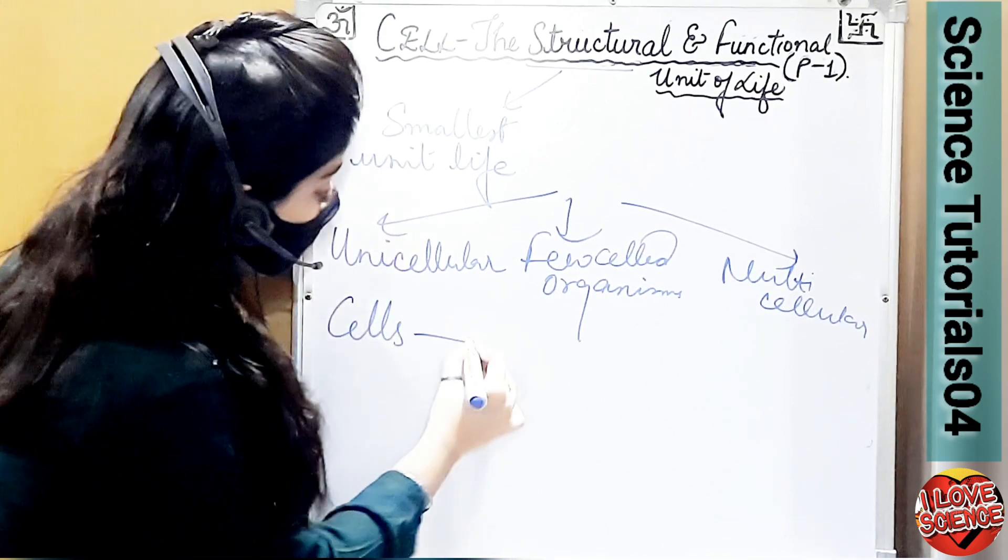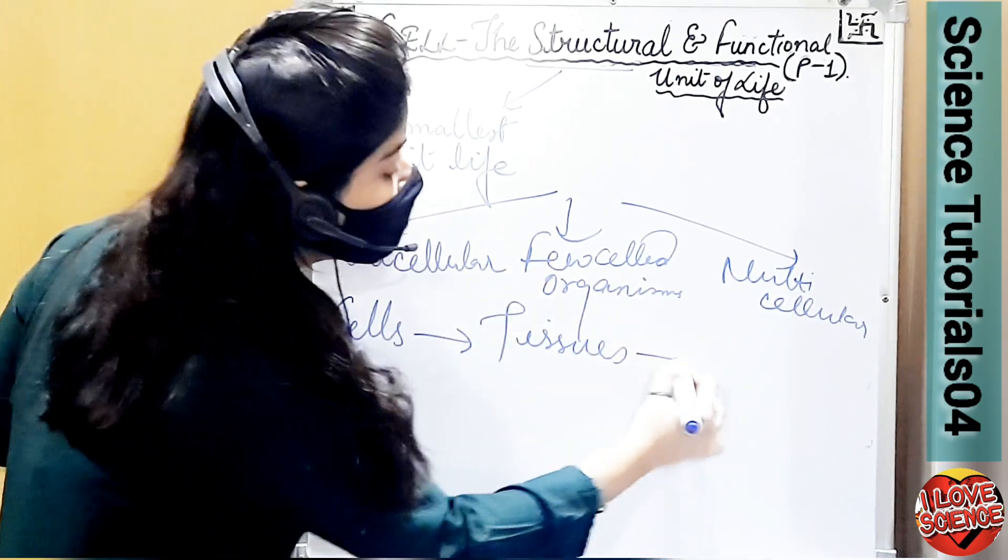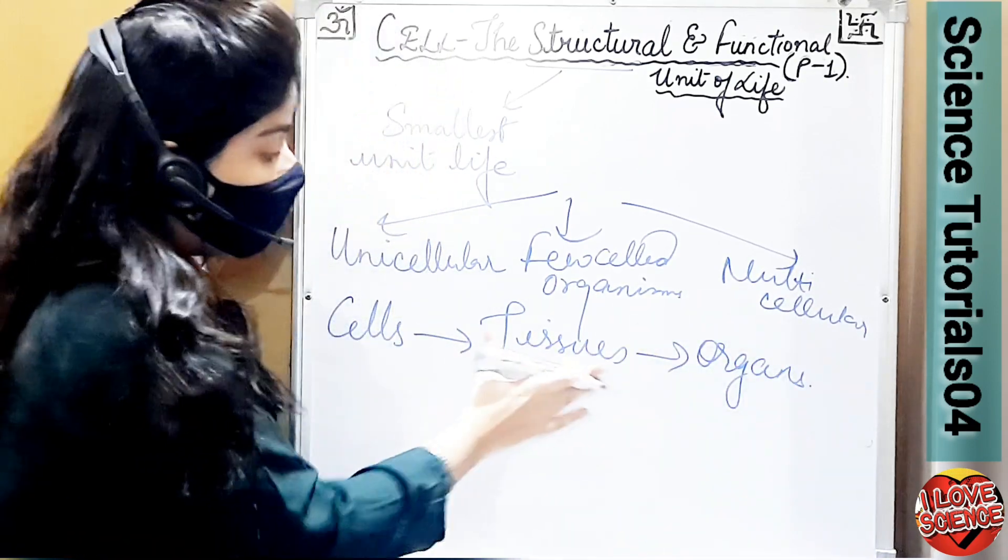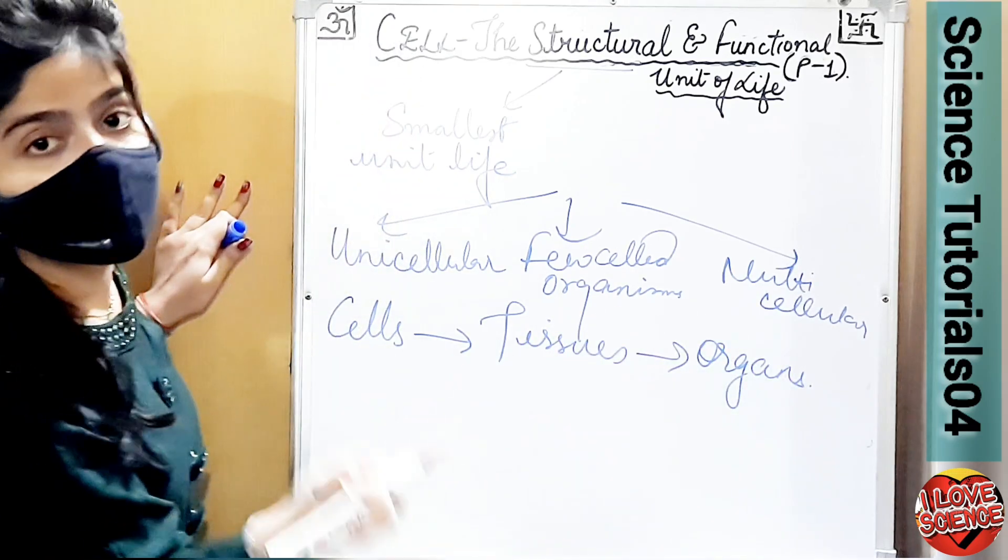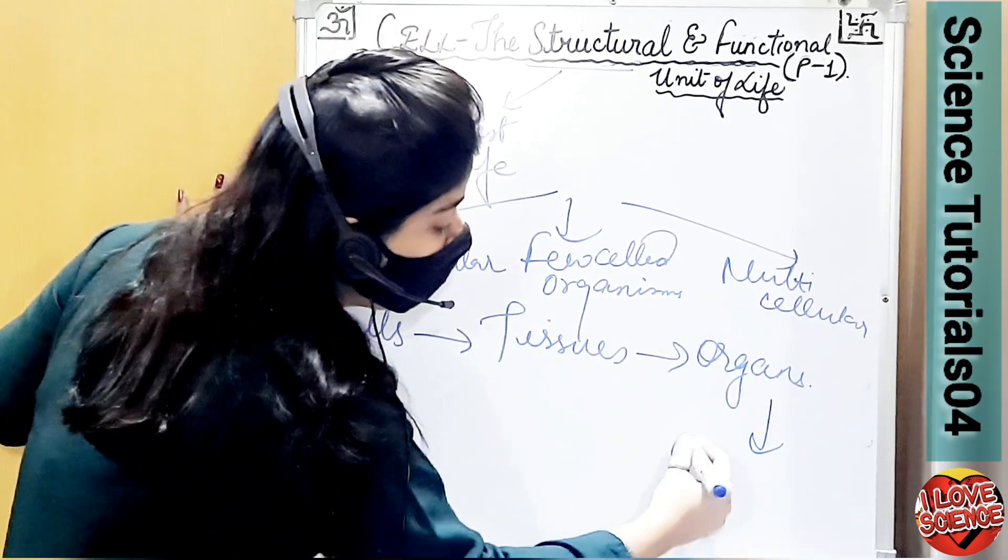Cells combine to form tissues. Tissues combine to form organs. Tissues combine to form heart, lungs, liver. Then organs combine to form organ systems.